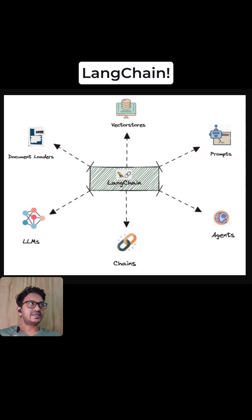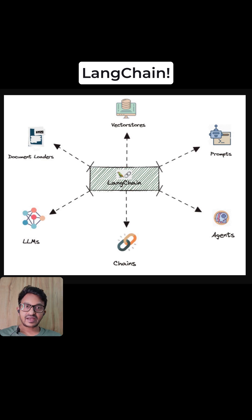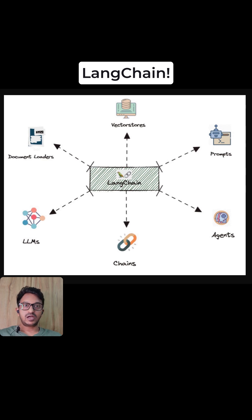Think of it this way — without a framework like LangChain, your developers need to hard-code a lot of things: connections to vector databases, prompt templates, and tool calling. So it becomes really hectic without LangChain. LangChain makes the developer's life much easier because you can just use it as a plug-and-play thing to start building your AI or LLM-powered applications.